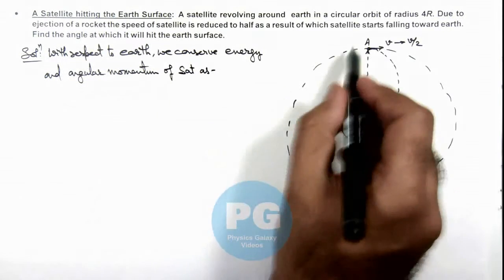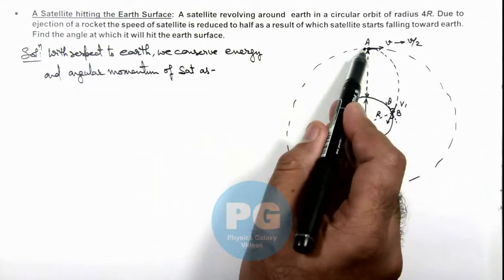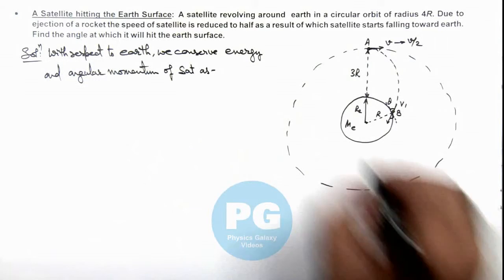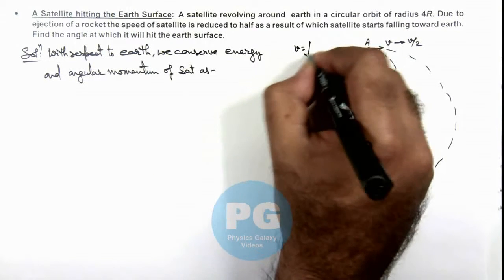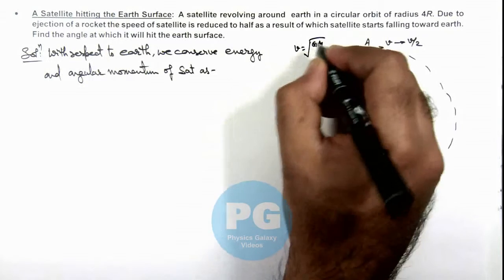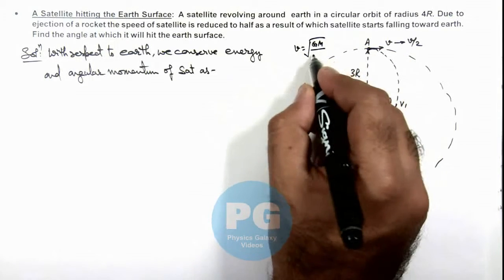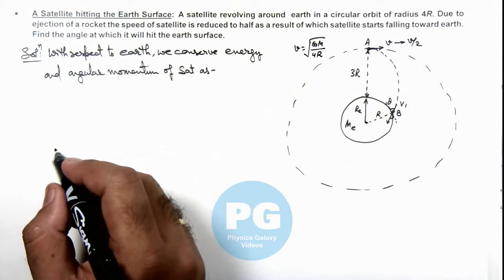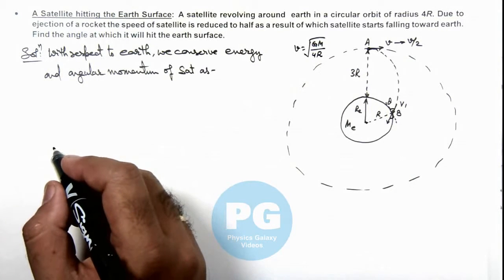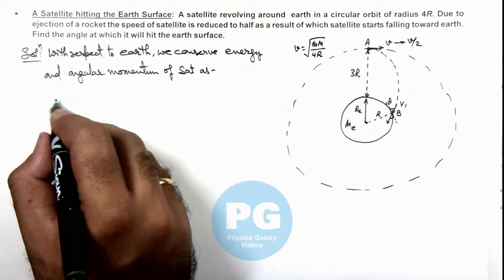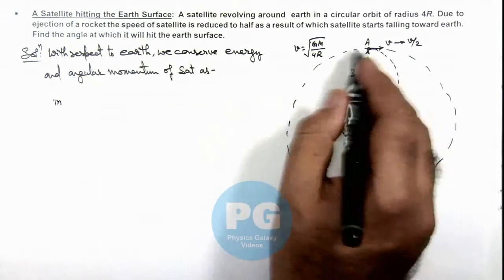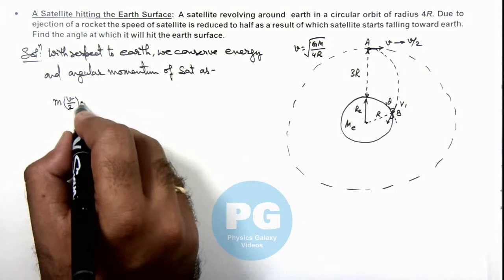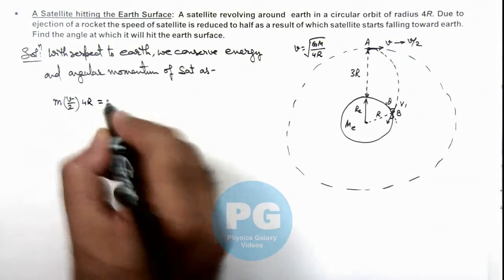Here we can write for angular momentum, the initial velocity is reduced to v/2. We know orbital speed v can be written as √(GME/4R). So here we can write the initial angular momentum as mass multiplied by the speed v/2, multiplied by 4R.